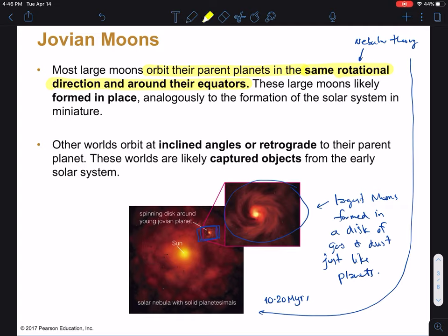I like to think of these things as being little mini solar systems in their own right. Some of the other moons, especially the smaller ones, are in inclined orbits where they don't orbit in the plane of the planet, in the equatorial plane. And they also often are rotating backwards. Remember, retrograde means backwards. This indicates that many of these small moons with these funny orbits are likely captured objects. And so that's how we know that some formed in place and some were captured.